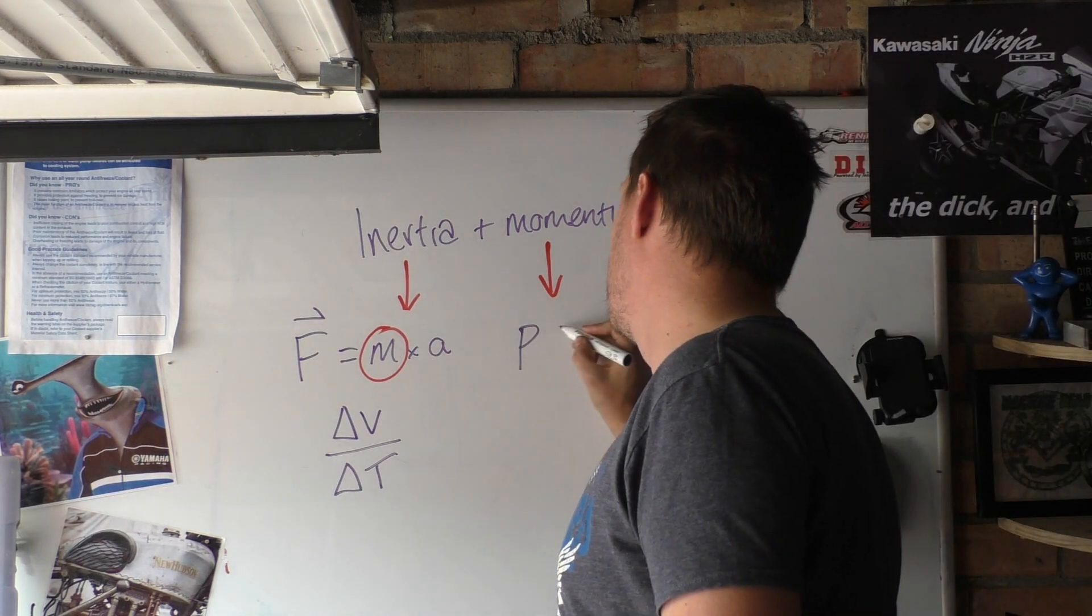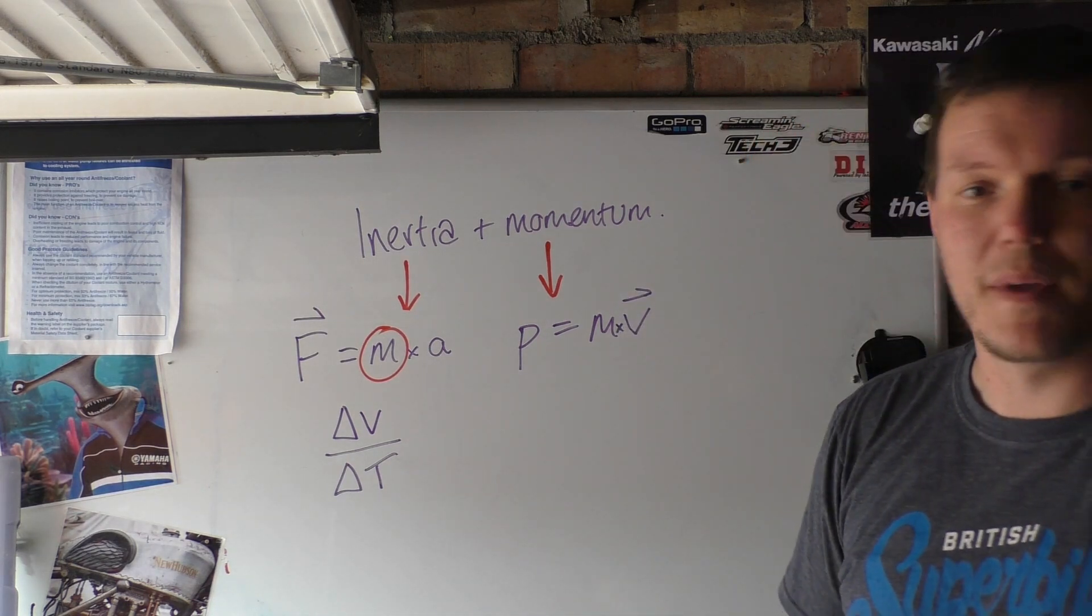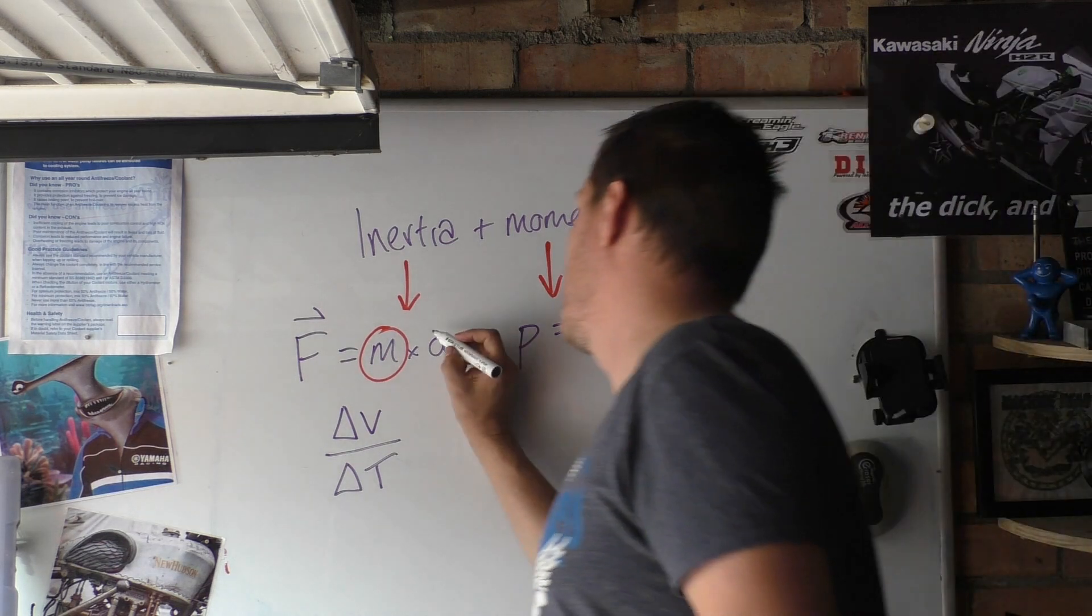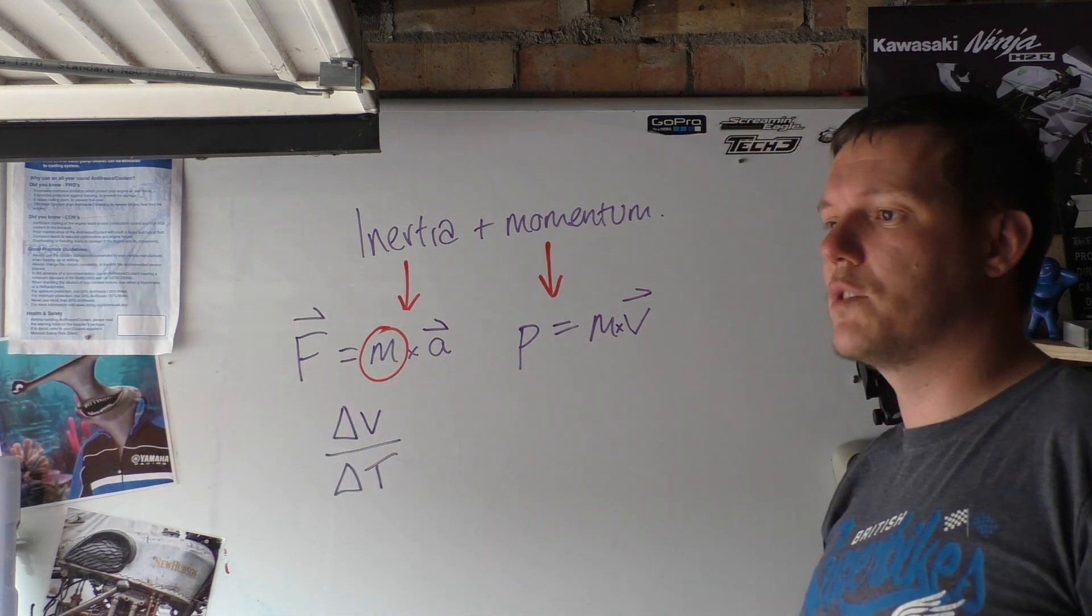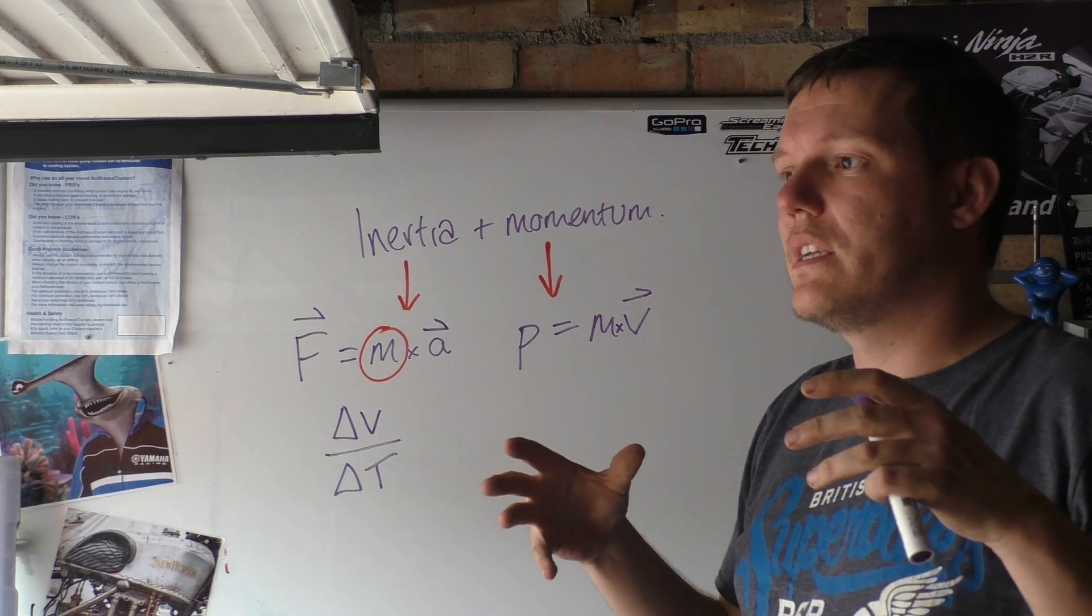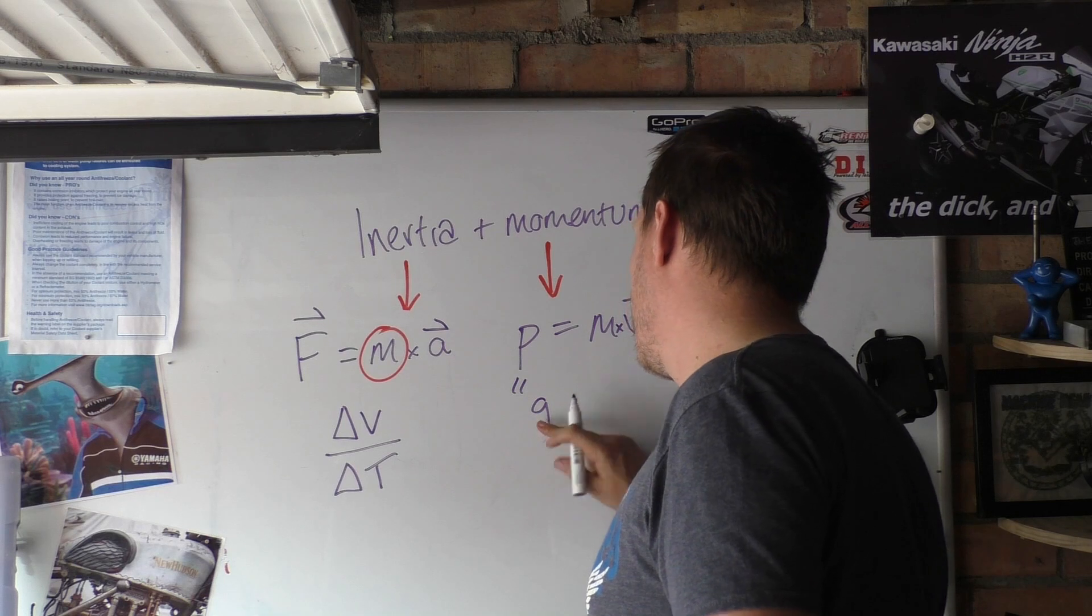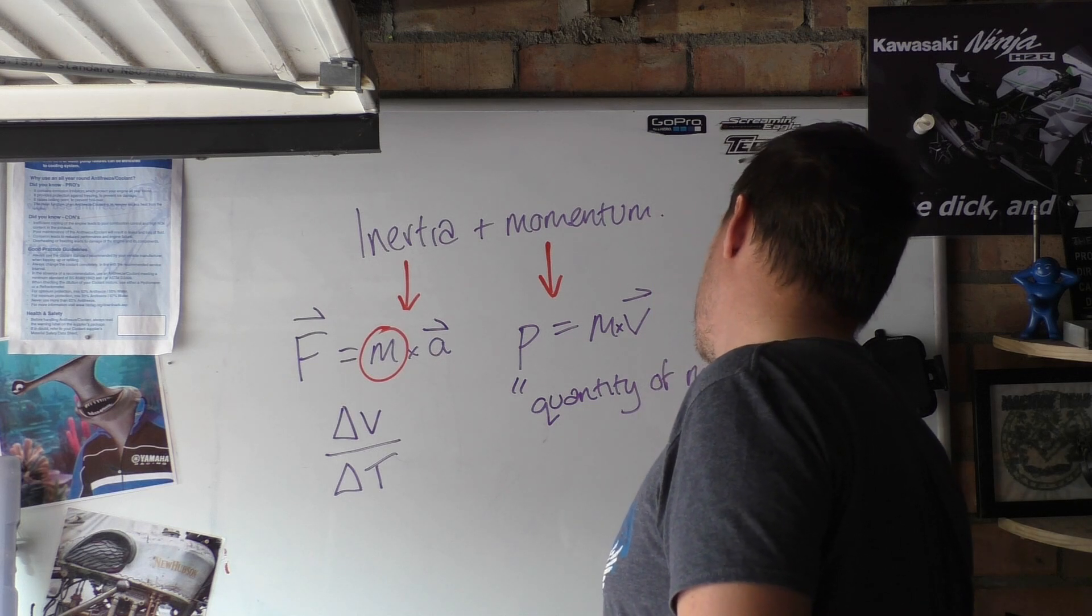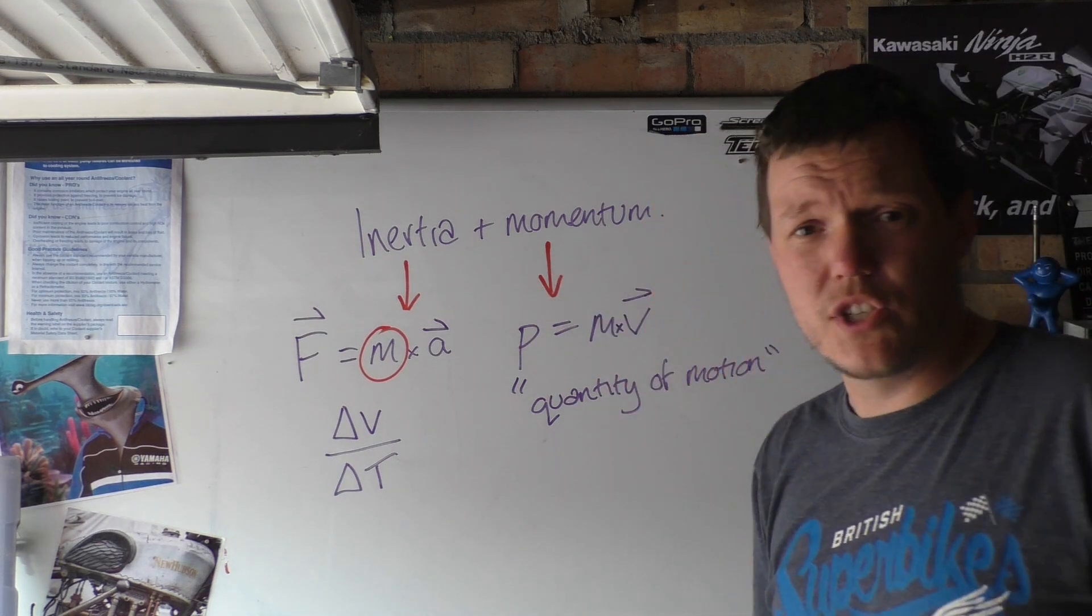When we look at momentum, momentum is mass times our velocity, p = m × v. Now our velocity has a vector, our force has a vector, acceleration has a vector as well. These are all vector quantities. Vector meaning that it has to have a direction. It can't just be anywhere. So when we look at these, momentum is the quantity of motion. It's not the best description I know, but it will do.